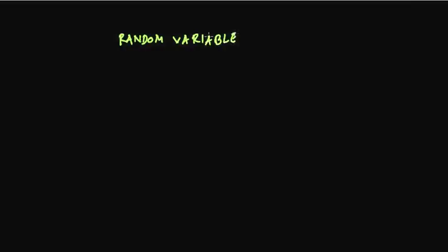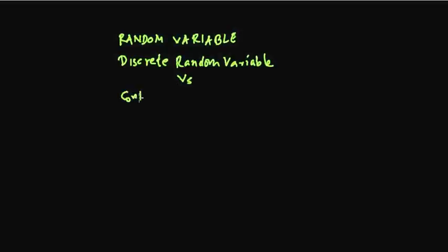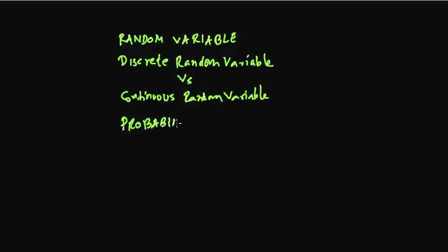This is S1: Discrete Random Variable. This topic is going to cover, first of all, what is a random variable, then what is the concept of discrete versus continuous random variable, and finally how this all comes together using the probability distribution table.